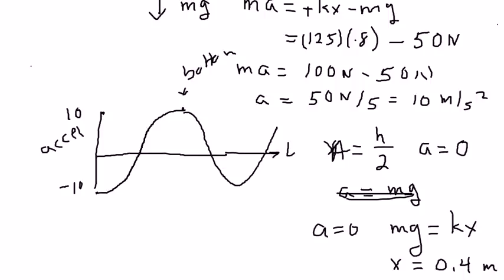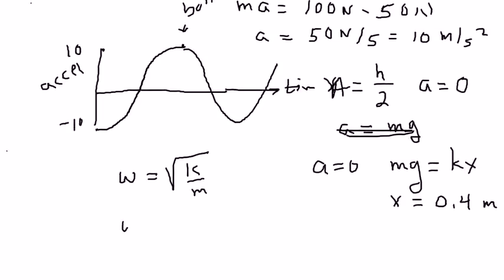The angular frequency omega is square root of k over m and in this case we could easily write omega is equal to 5 radians per second.